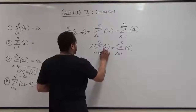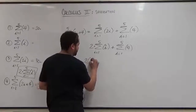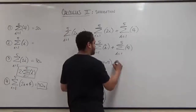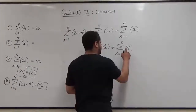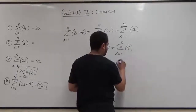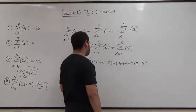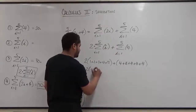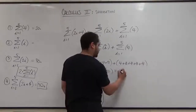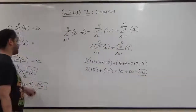Now we factor out the constant term on the first summation, giving us 2 times the summation from 1 to 5 of just i, plus the summation from 1 to 5 of 4. We take the sum of the first five terms 1 plus 2 plus 3 plus 4 plus 5, and add the sum of five 4s which is 4 plus 4 plus 4 plus 4 plus 4. We know this inner sum is 15, so we have 2 times 15, and the constant sum is 20. So 30 plus 20 is 50. That is the summation of this term.